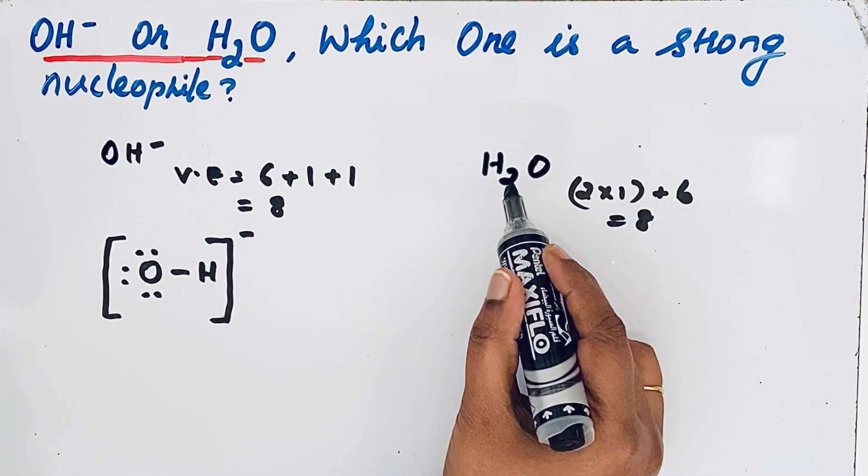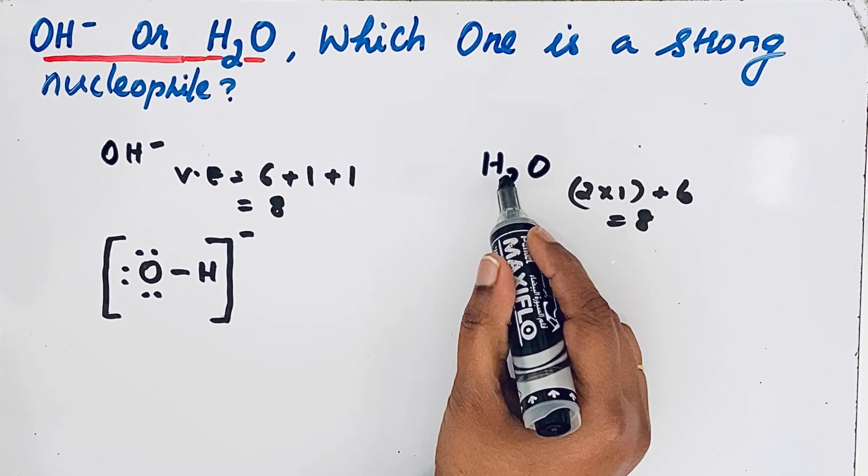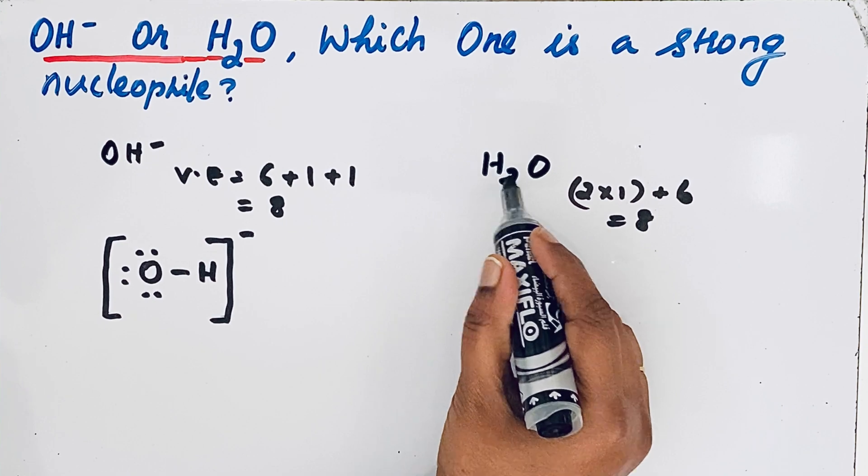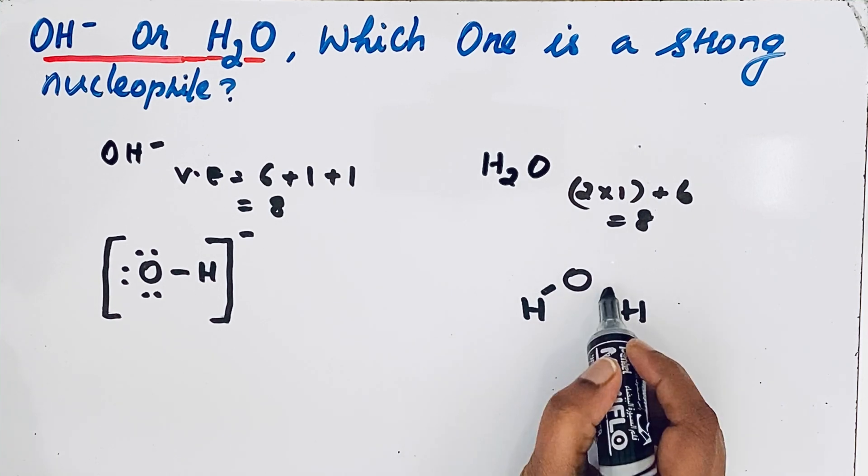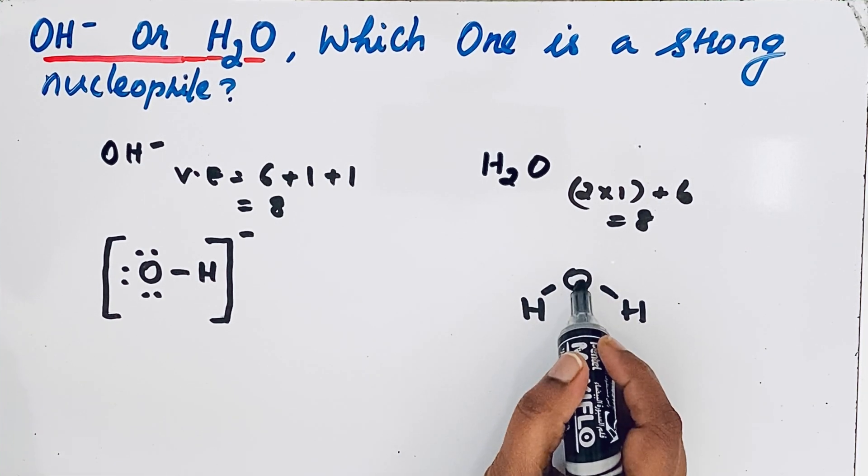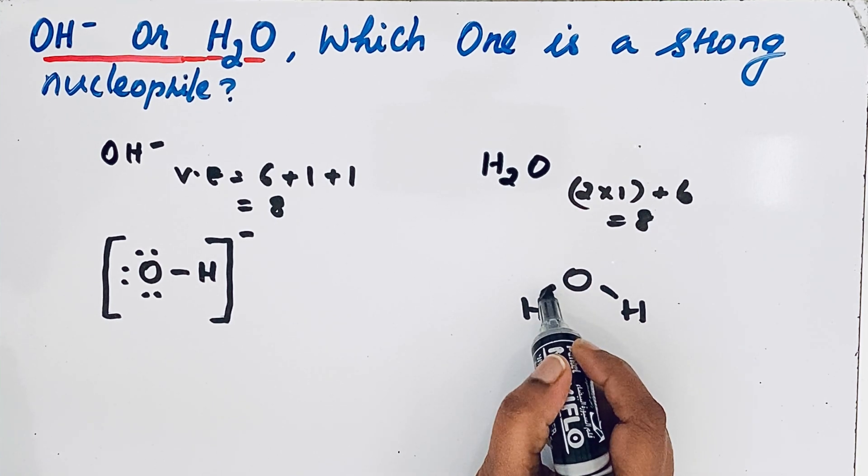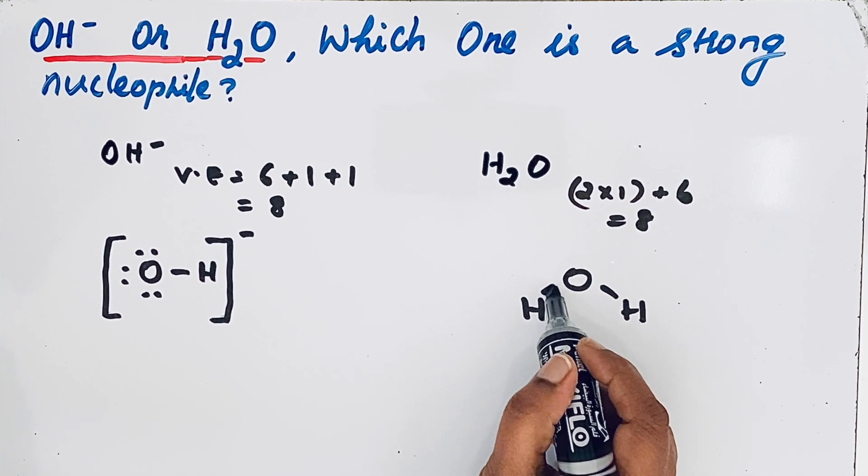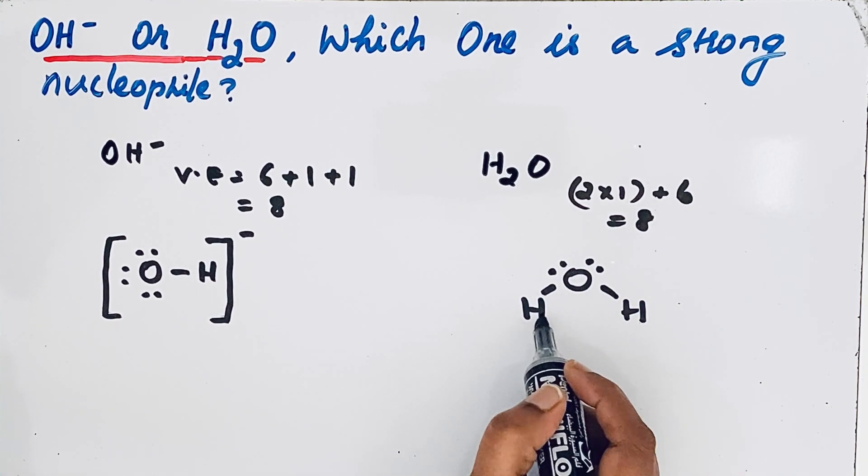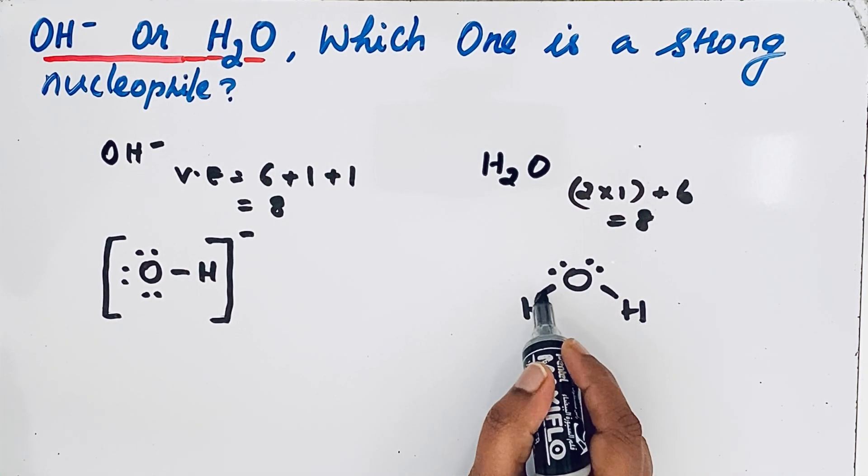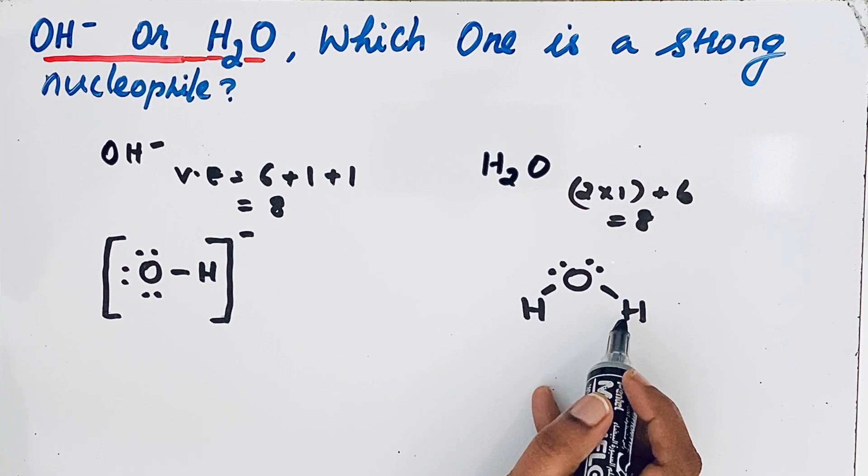While writing the Lewis structure, the less electronegative element goes in the center, but we don't write hydrogen in the center. So oxygen goes in the center and hydrogen around it. We draw the lines. Oxygen is a highly electronegative element, so its octet should be completed. Here already 2, 4 because single bond means 2 electrons. Then 6 and 8. For hydrogen, duplet means only 2 electrons, so its duplet is completed for both hydrogen atoms.